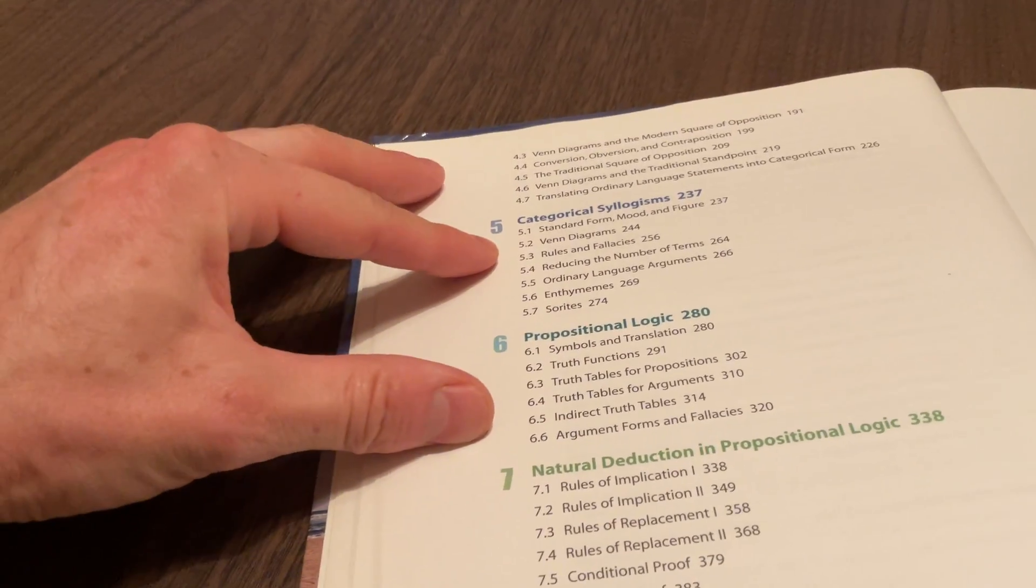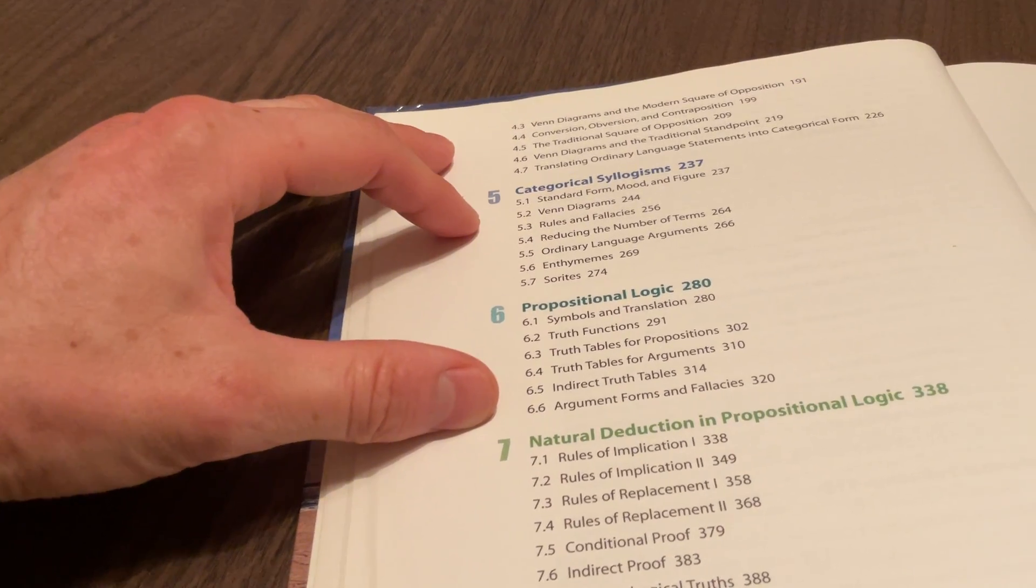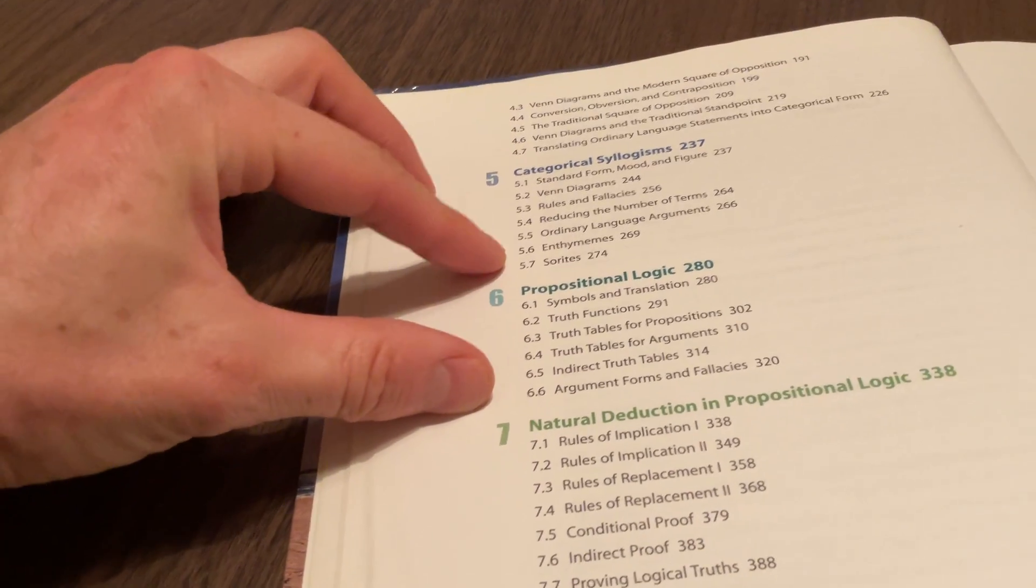Chapter five is on categorical syllogisms. You can use Venn diagrams with that. There are also enthymemes and sorites.